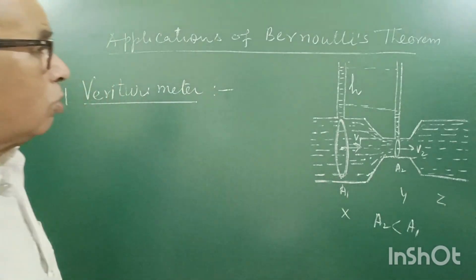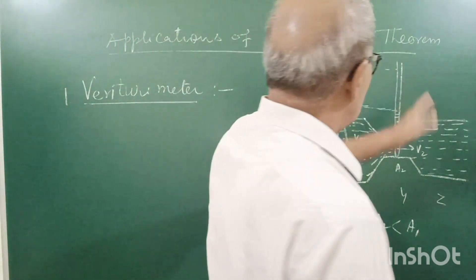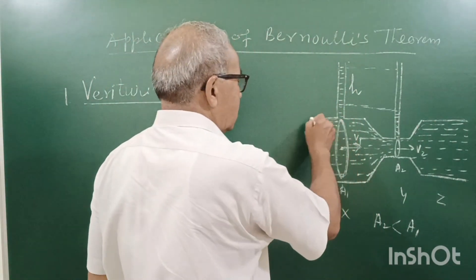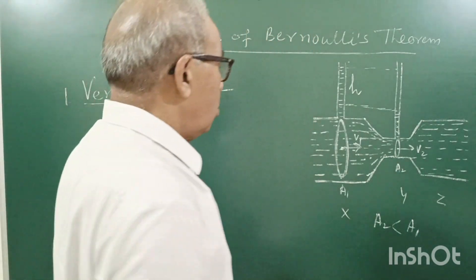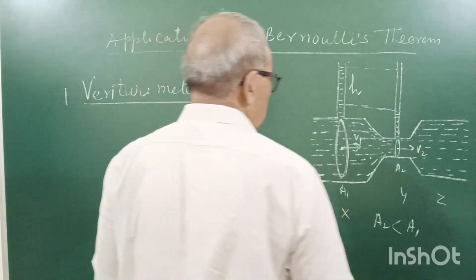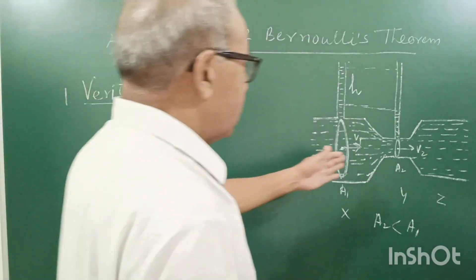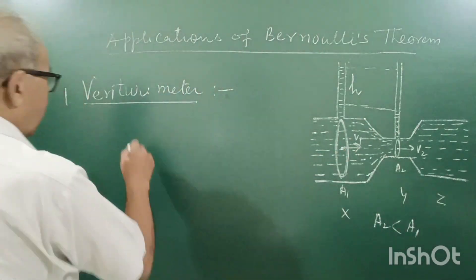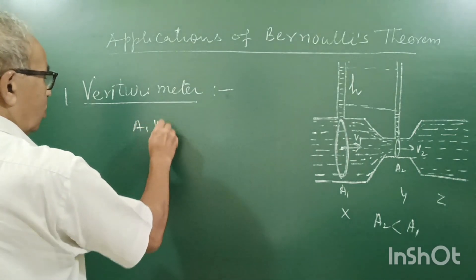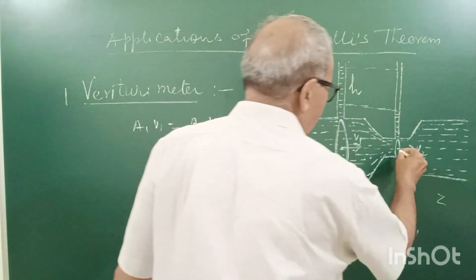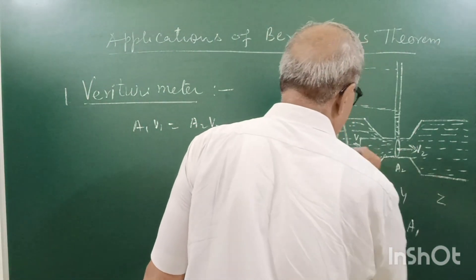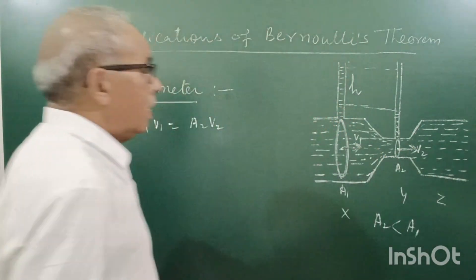When liquid flows, these are two glass tubes fitted with this device which acts as a manometer. Now, liquid flows from where the area is larger, V1 is lower, and we have A1 V1 equal to A2 V2. Therefore, here V2 is greater than V1.